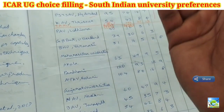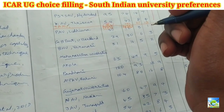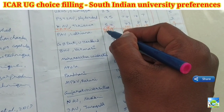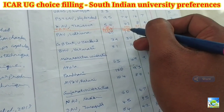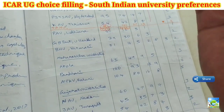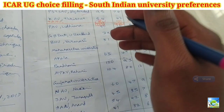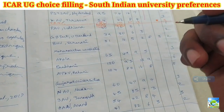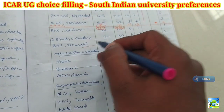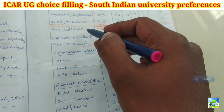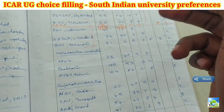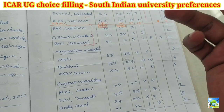Up to here, including TNAU which has 181 seats, if you want BSc Agriculture specifically at South Indian universities you can choose preferences up to this point. Including TNAU, there are 762 total seats and 435 unreserved seats. From this you can judge whether you can get a seat. Next is Punjab Agriculture University — well known at the national level — GP Banta Agriculture University, and Banaras Hindu University Varanasi. These are the top universities after IARI and will be filled first.